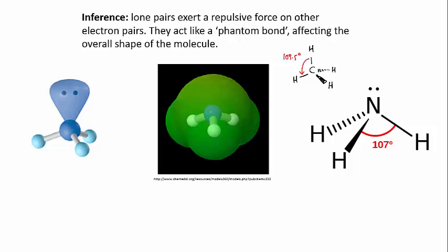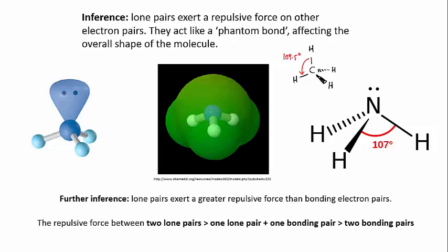Well, the inference that we make is that a lone pair exerts a greater repulsive force than a bonding pair. This means that if you had two lone pairs repelling each other, the force would be greater than if you had a lone pair versus a bond, as we have here, and that would be greater than the force between two bonds. So here, the three NH bonds lose out a bit, and they're pushed closer together by the lone pair, which makes the bond angle smaller.